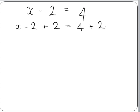The minus 2 and the plus 2 will give us 0, so we will be left with x plus 0 on the left hand side. And 4 plus 2 will give us 6 on the right hand side. So x plus 0 just gives us x, so we have x equals 6. So now we have a value for x, so our equation is solved.